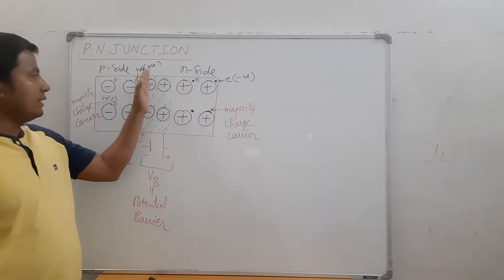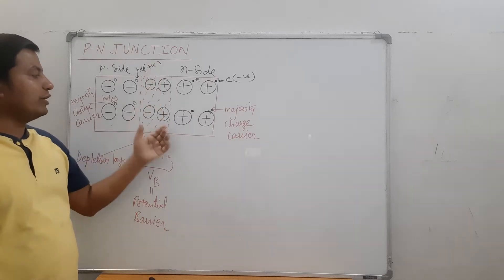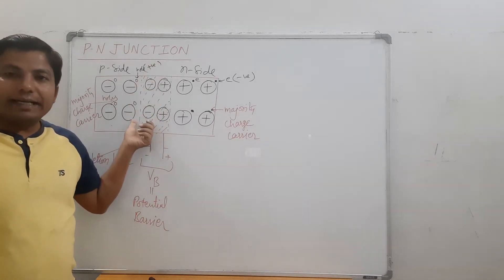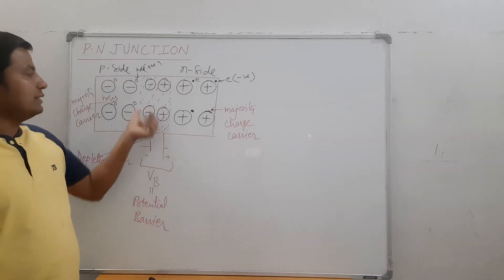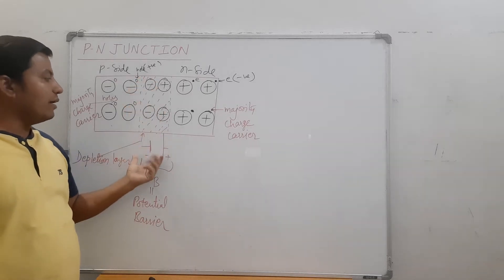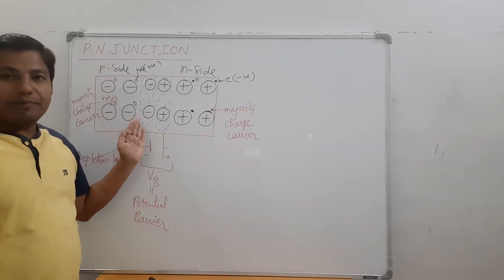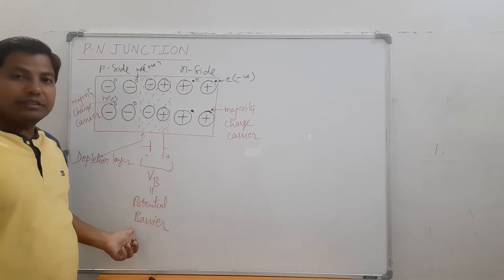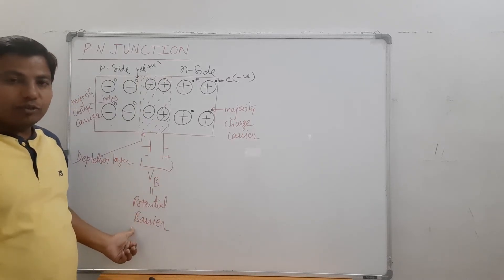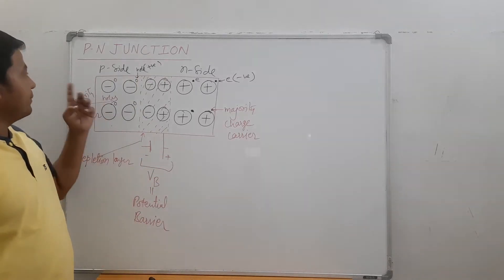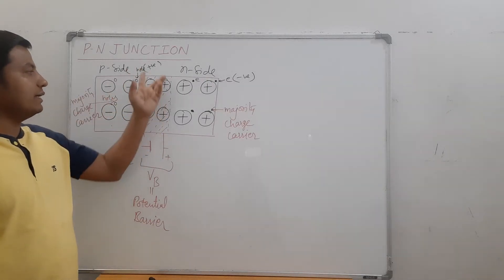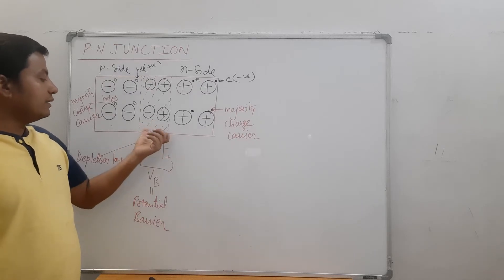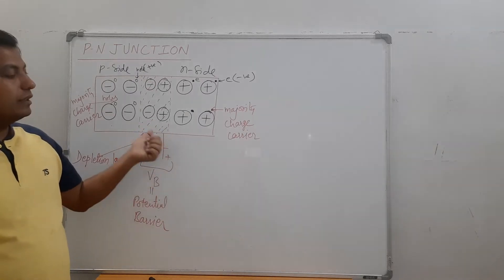One side of the depletion layer becomes negatively charged and the other side becomes positively charged because of the accumulation of negative and positive immobile ions. Due to this, a potential difference is developed in the depletion region. This potential difference is known as the potential barrier. So when we combine the P side and N side, a depletion region is formed and there will be a potential barrier across the depletion region.